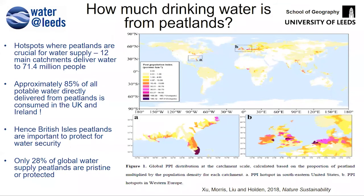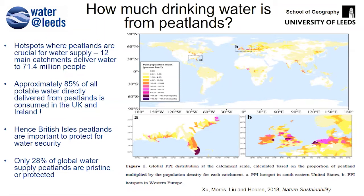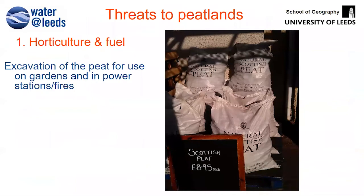Treatment works built in the 1970s and 1980s are already at capacity in many areas. Building a new water treatment works for one river network can cost 50 million pounds, so if we can address this through cheaper land management while building other benefits, that's really valuable. We looked at where peat and people overlap — the peat-population index — and found that 85 percent of people globally being directly supplied with water from peatlands are in the British Isles. This makes the British Isles a major, globally unique hotspot for peatland water supply.